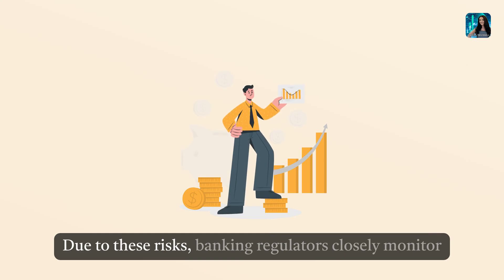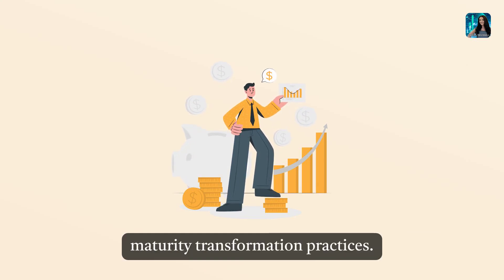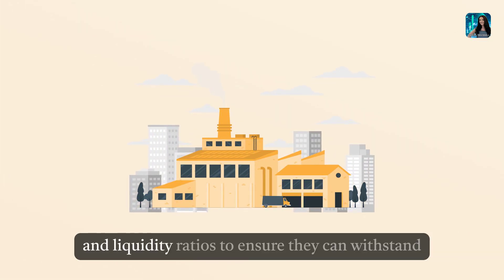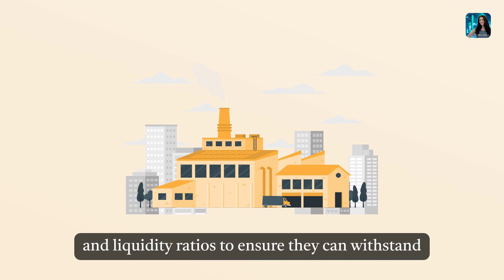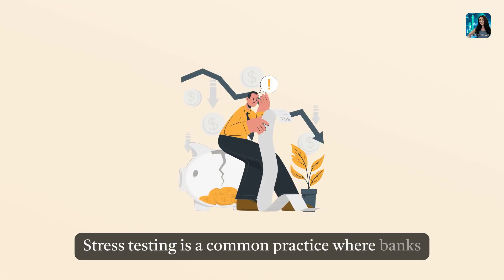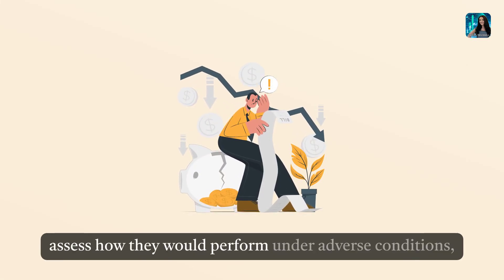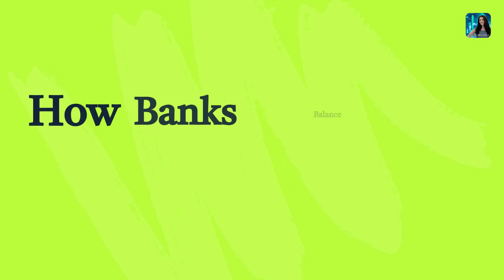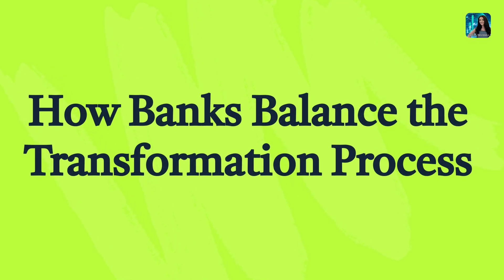Regulatory framework. Due to these risks, banking regulators closely monitor maturity transformation practices. Regulators require banks to maintain certain capital levels and liquidity ratios to ensure they can withstand financial shocks. Stress testing is a common practice where banks assess how they would perform under adverse conditions, ensuring they are prepared for potential liquidity shortfalls.